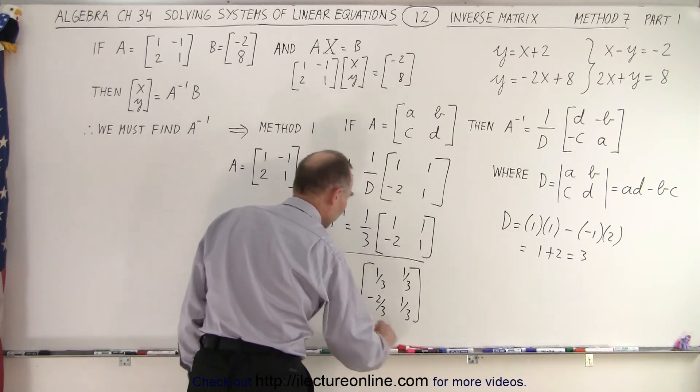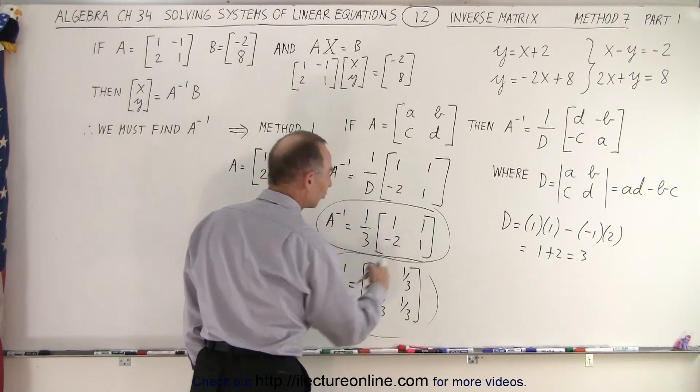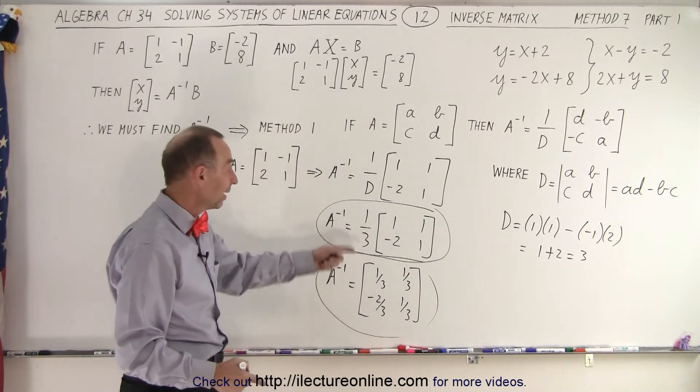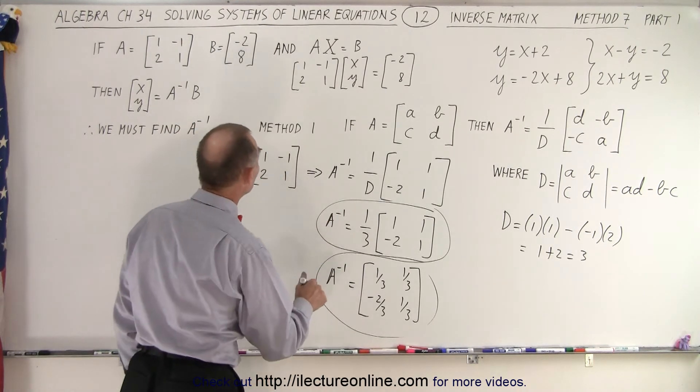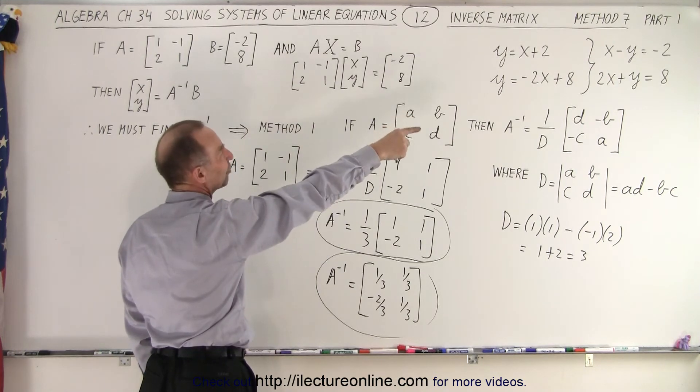So there is the inverse matrix, depending upon if you prefer this format or that format, I prefer this format, but that's simply the inverse matrix, and now all we have to do is multiply that inverse matrix times negative 2 and 8.